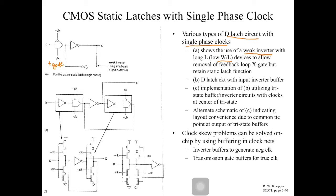The transmission gate is used such that when the clock is high, the data D passes through. When the clock is high, clock-bar is zero, so the input is transmitted to the output, and the inverter inverts the output. This helps to retain the signal inside the feedback loop.